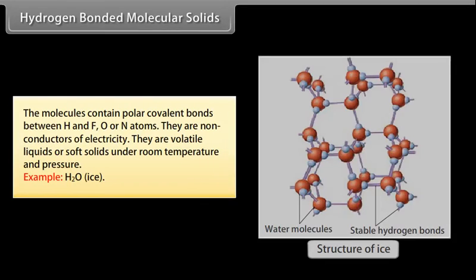Hydrogen bonded molecular solids: The molecules contain polar covalent bonds between H and F, O or N atoms. They are non-conductors of electricity. They are volatile liquids or soft solids under room temperature and pressure. Example: H2O.